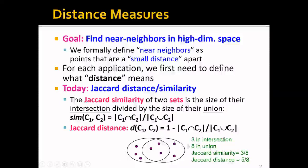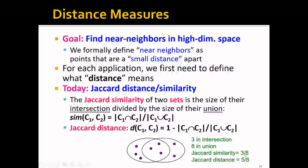A concrete example: we have a first set of six points and a second set of five points. We can see there are three elements in the intersection and eight in the union. Therefore, the Jaccard similarity is three over eight, and the Jaccard distance is one minus three over eight, which is five over eight.